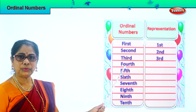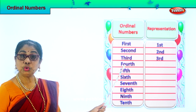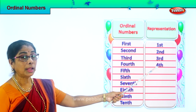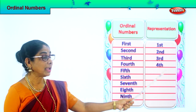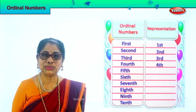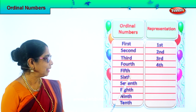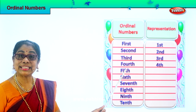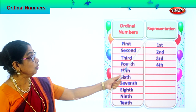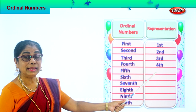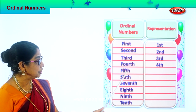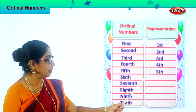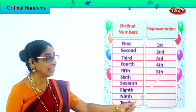Now look at the fourth spelling: F-O-U-R-T-H. Fourth. How do you represent fourth? Put four and put TH at the side: 4th. Spell fifth: F-I-F-T-H. Fifth. And how do you represent fifth? Put number five and put TH: 5th.